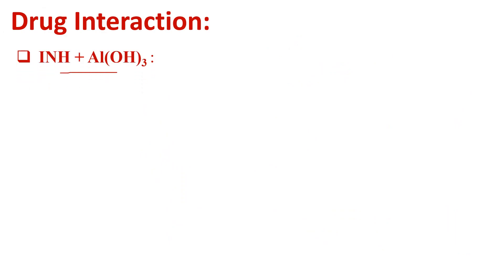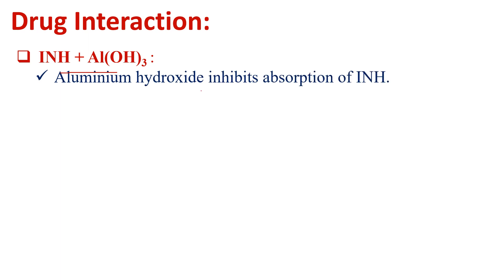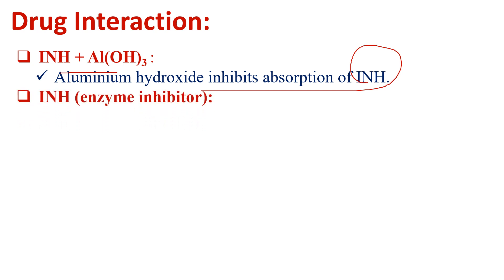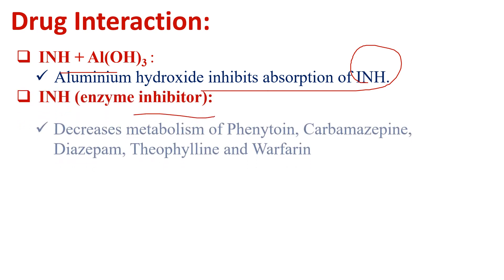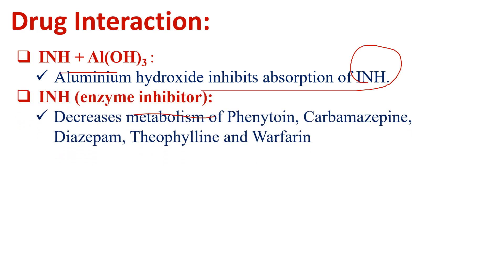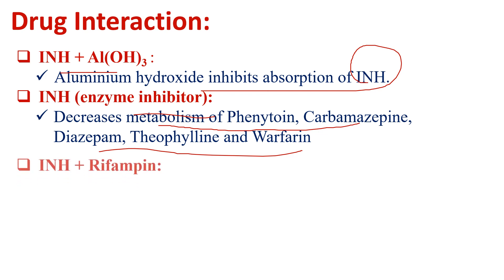Now we will see the drug interactions of isoniazid. If isoniazid is given with aluminium hydroxide, aluminium hydroxide inhibits the absorption of isoniazid. Since isoniazid acts as an enzyme inhibitor, there is decreased metabolism of phenytoin, carbamazepine, diazepam, theophylline, and warfarin.